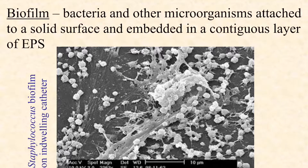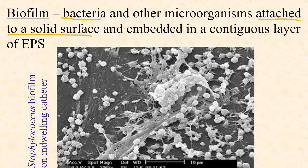So how do we define a biofilm? A biofilm is made up of bacteria, and sometimes other microorganisms are recruited into the biofilm as well. It's key that they are attached to a solid surface — these are not bacteria that are drifting and floating around. They are attached to a surface and embedded in a contiguous layer of EPS.